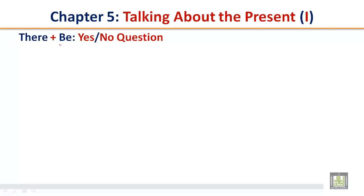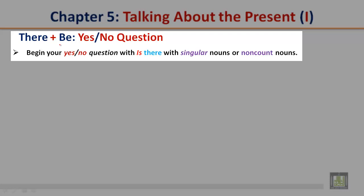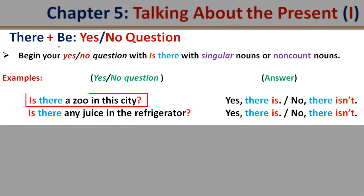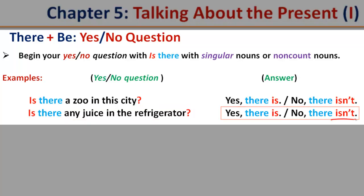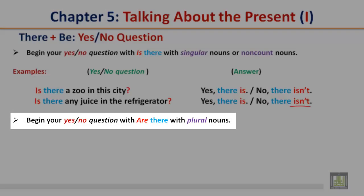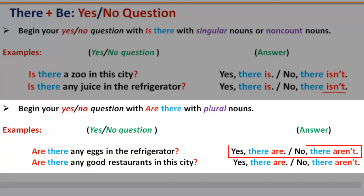There plus be — yes or no questions. Begin your yes or no question with 'Is there' with singular nouns or non-count nouns. Examples: Is there a zoo in this city? Answer: Yes, there is. No, there isn't. Is there any juice in the refrigerator? Yes, there is. No, there isn't. Remember, 'isn't' is a contraction of 'is not.' Begin your yes or no questions with 'Are there' with plural nouns. Examples: Are there any eggs in the refrigerator? Answer: Yes, there are. No, there aren't. Are there any good restaurants in this city? Yes, there are. No, there aren't.